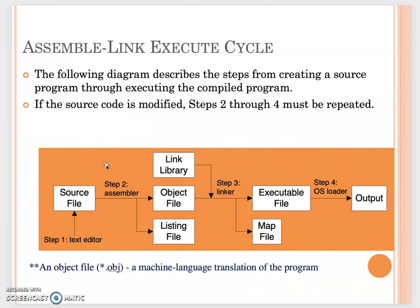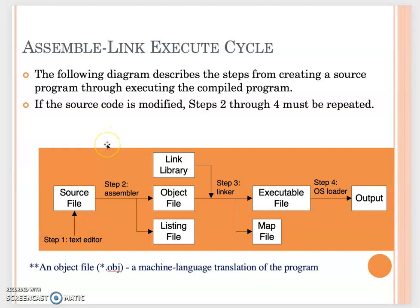Basically we have four different steps. The first step is in the IDE you can view your source file. This source file is viewed by the text editor. Once the text editor shows you the file is what you want to implement, you click the triangle in your IDE. With one click they start running, but in that one click, actually three different steps are included.